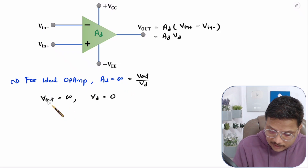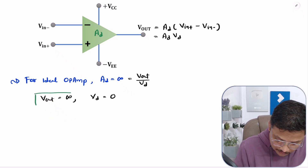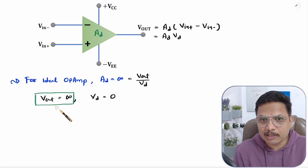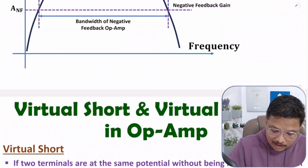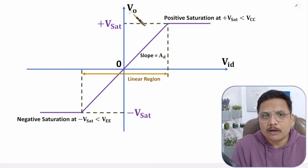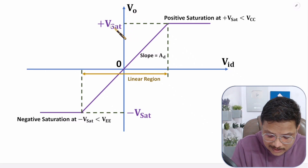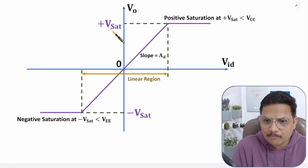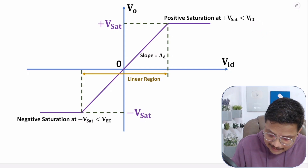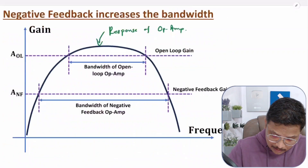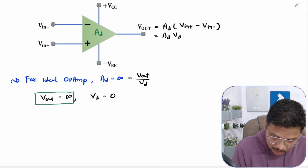If you talk about the first case — V out equal to infinite — do you think that is possible? Obviously no. If you observe the transfer characteristics, the output voltage of an op-amp has a positive saturation and a negative saturation. Positive saturation is somewhere below VCC and negative saturation is somewhere below minus VEE. So you cannot have V out equal to infinite, meaning this first possibility is not possible.